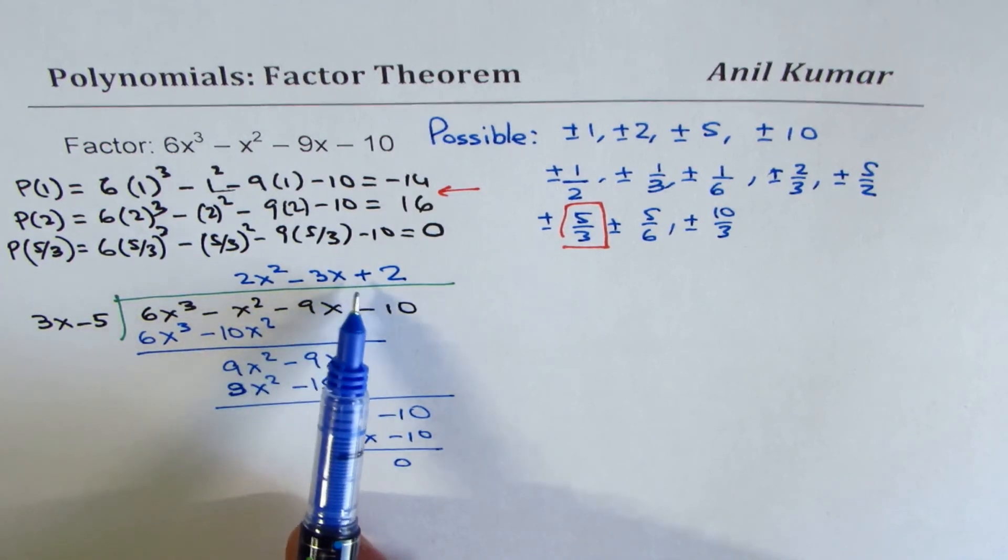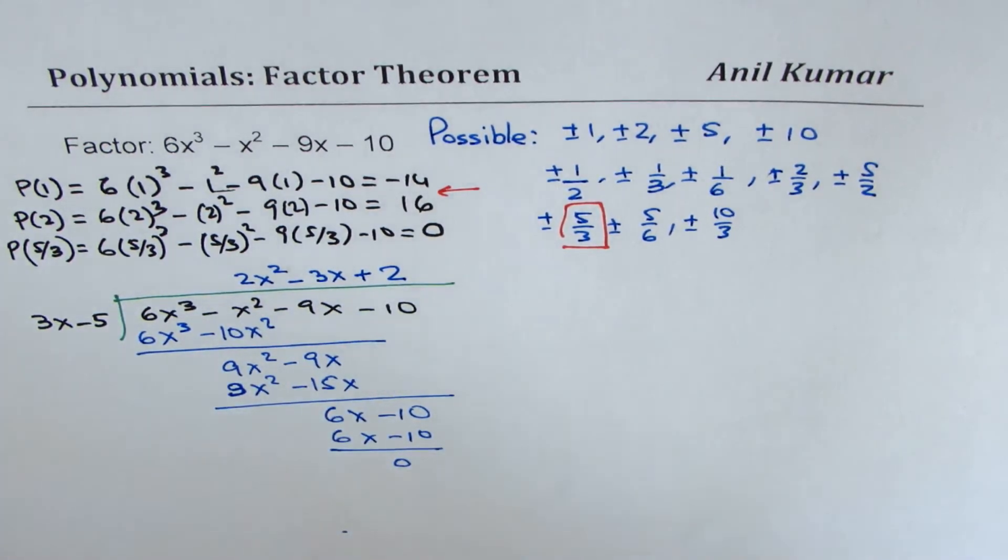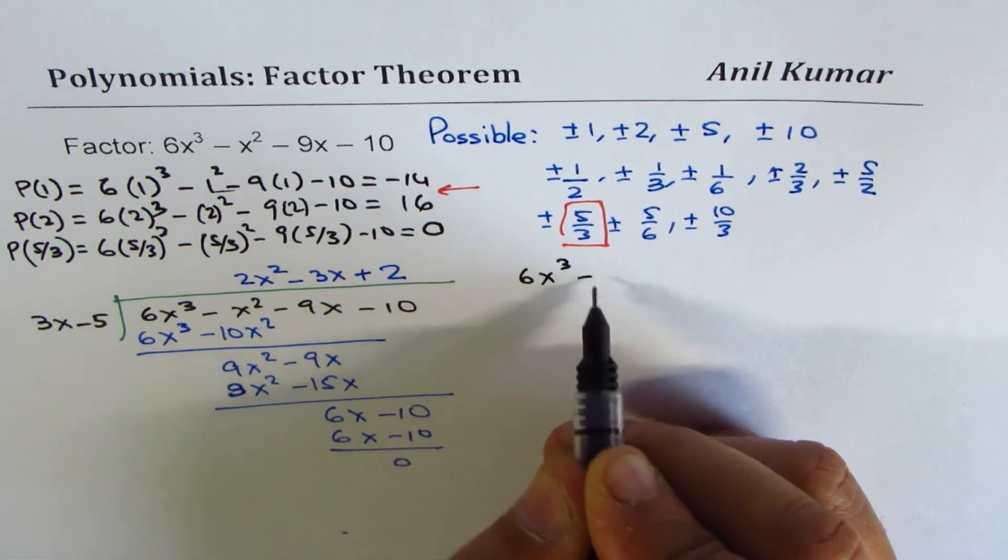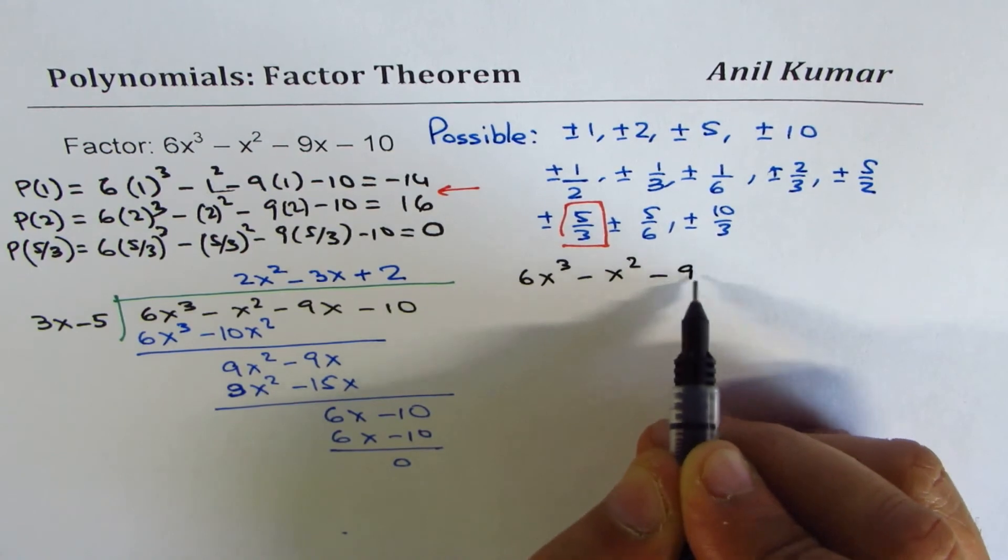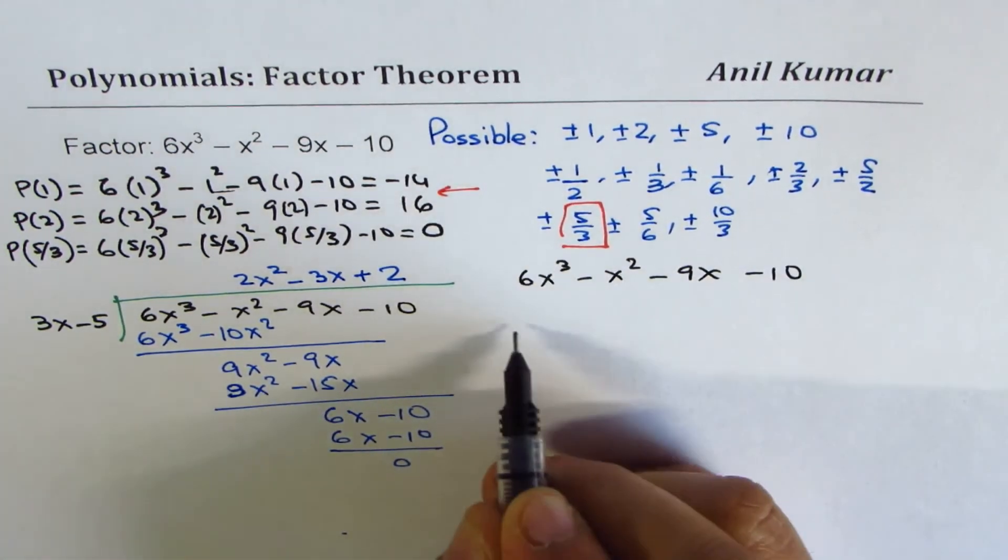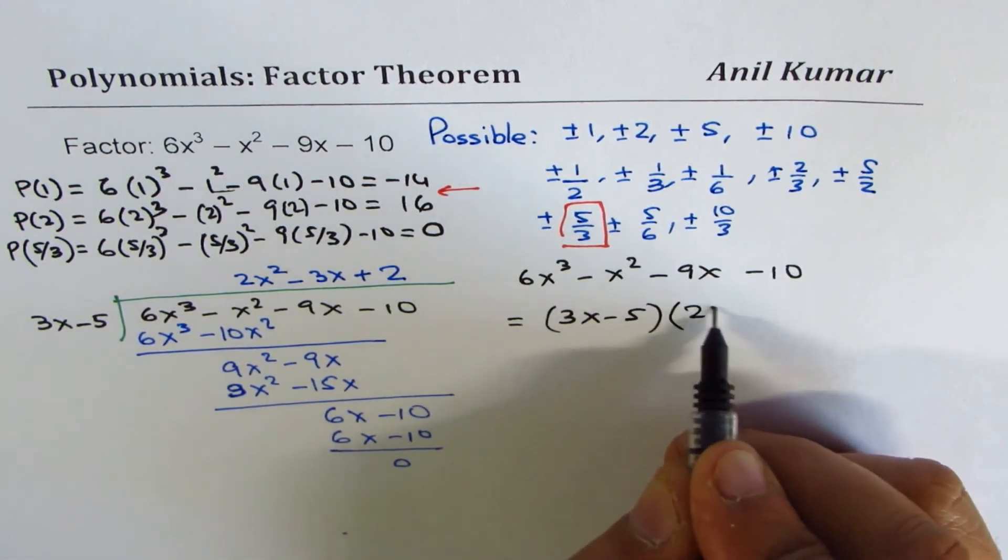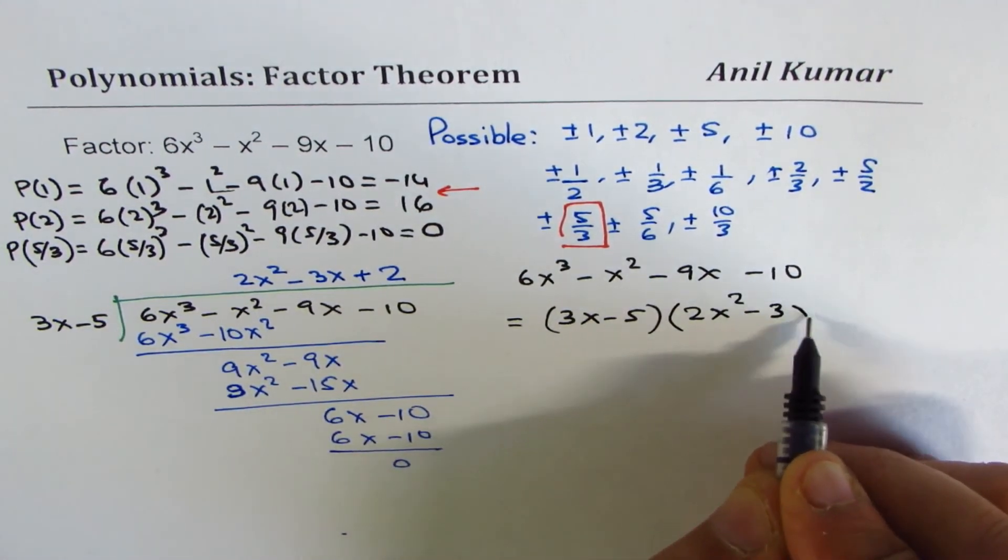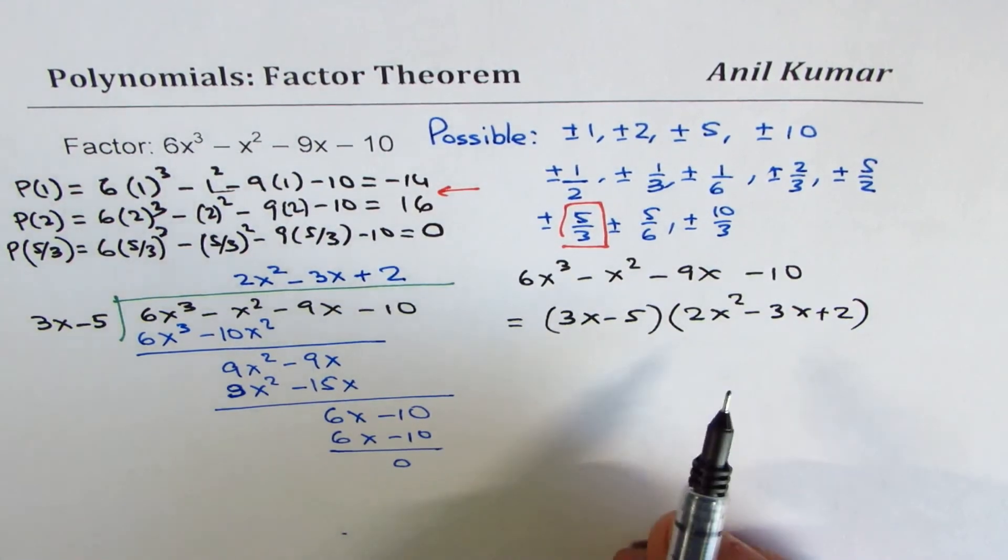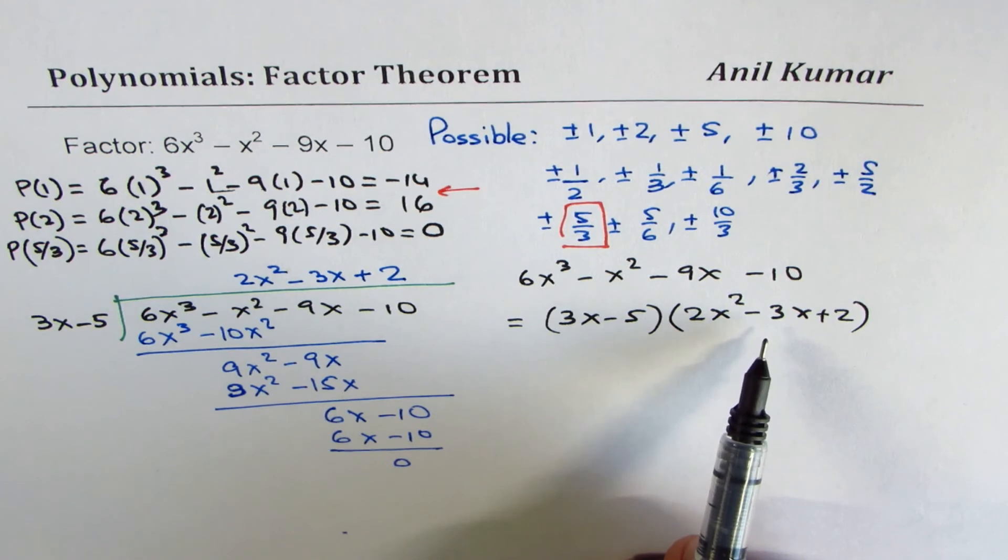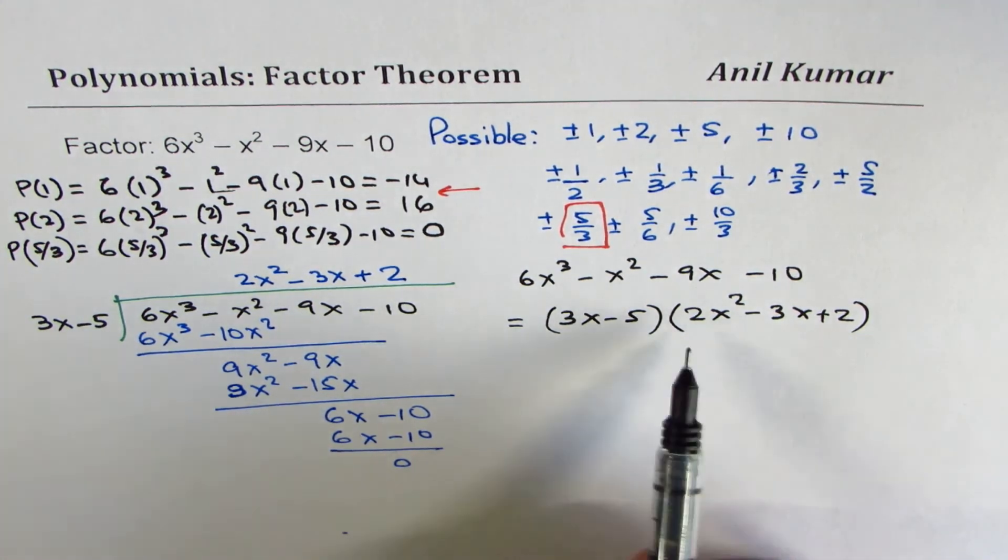We get a quadratic equation: 2x² - 3x + 2. So we could at this stage write our function, which is 6x³ - x² - 9x - 10 equals (3x - 5)(2x² - 3x + 2). Now, we could do product and sum. 2 times 2 is positive 4, and we are looking for sum to be -3, which is not possible. So that is our final answer.